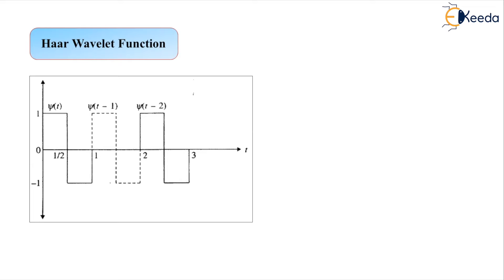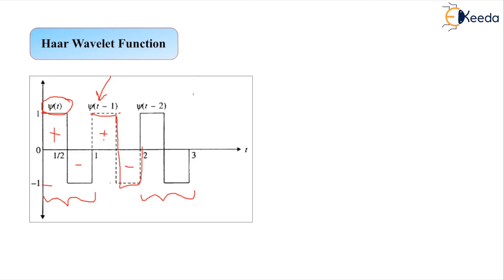On the vertical axis the amplitude markings are −1, +1, and 0. The original Haar Wavelet function is represented for the time span 0 to 1: for the first half duration we have +1 and for the second half we have −1. When we translate by one unit to the right, we get Psi of t minus 1, with the same pattern drawn for the duration 1 to 2, switching from +1 to −1 after 1.5. For duration 2 to 3, it is denoted Psi of t minus 2. These are the translated versions of the Haar Wavelet function.